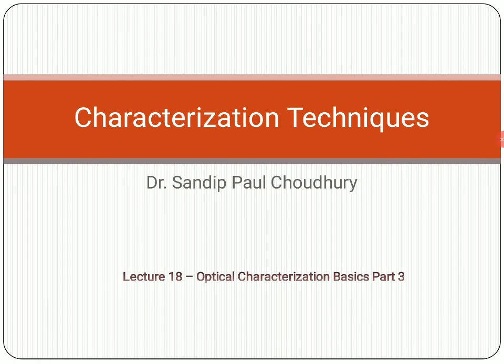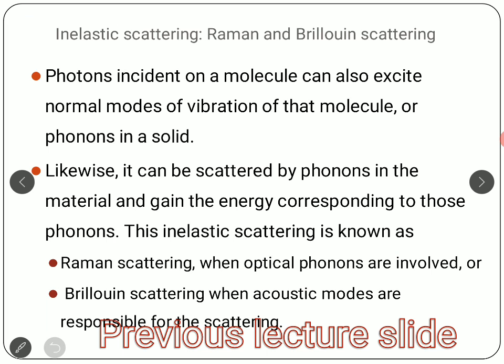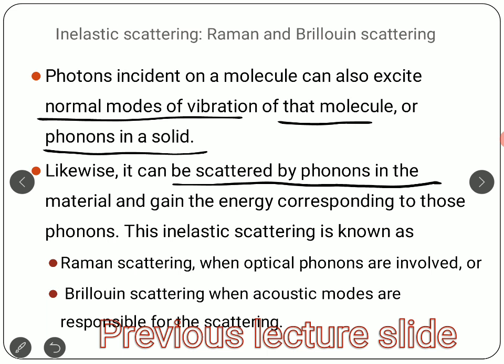In the last part of optical characterization basics, we are going to look into some more aspects and relations. When we talk about inelastic scattering, photons incident on a molecule can excite normal modes of vibration or phonons in a solid. A photon incident on a material can be scattered by phonons, gaining energy corresponding to those phonons, creating some kind of resonance — this is inelastic scattering.